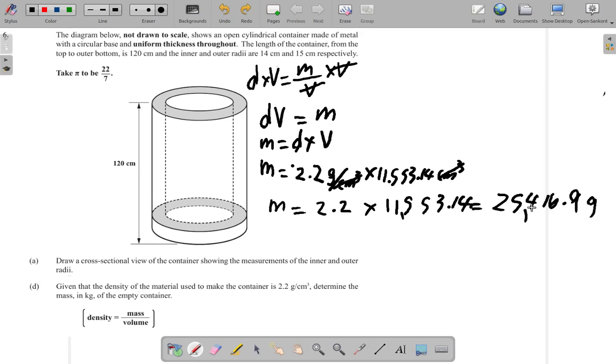What you need to do is divide by a thousand, because one thousand grams make one kilogram. Remember this is in grams. In order to go from grams to kilograms you divide by a thousand. So one gram is a thousandth of a kilogram, so I need to divide this by a thousand. So 25,416.9 grams divided by a thousand would give me 25 point...